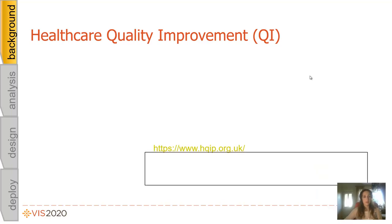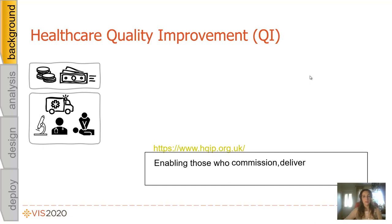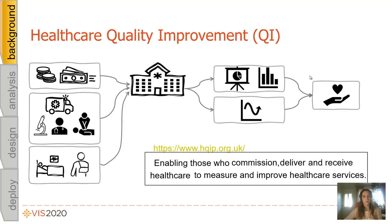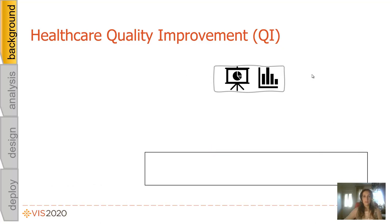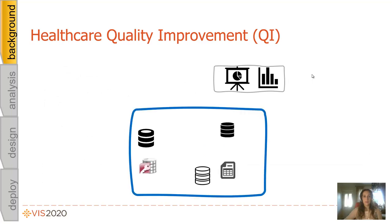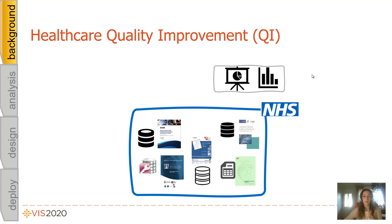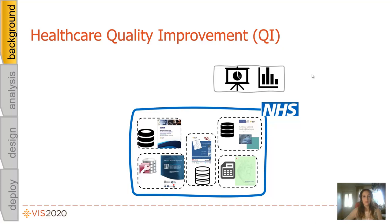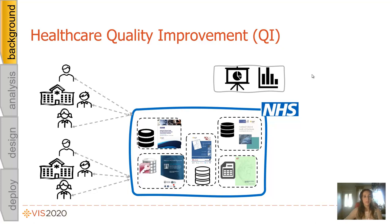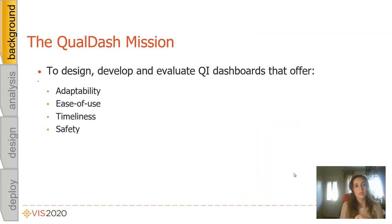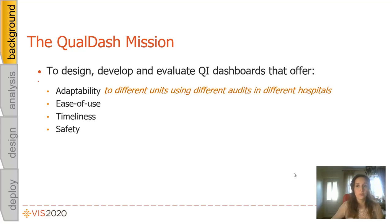The QualDash project is funded by the National Institute for Health Research in England, and it aims for the adaptable generation of visualization dashboards for healthcare quality improvement. QI is simply defined as the process of enabling those who commission, deliver, and receive healthcare to measure and improve healthcare services. This idea of measuring and improving healthcare services is supported by a number of datasets managed by NHS England called National Clinical Audit Data, which records interactions between patients and different services in the healthcare system. These audits are sort of separate islands, maintained and managed by different audit coordinators in different hospitals across the country.